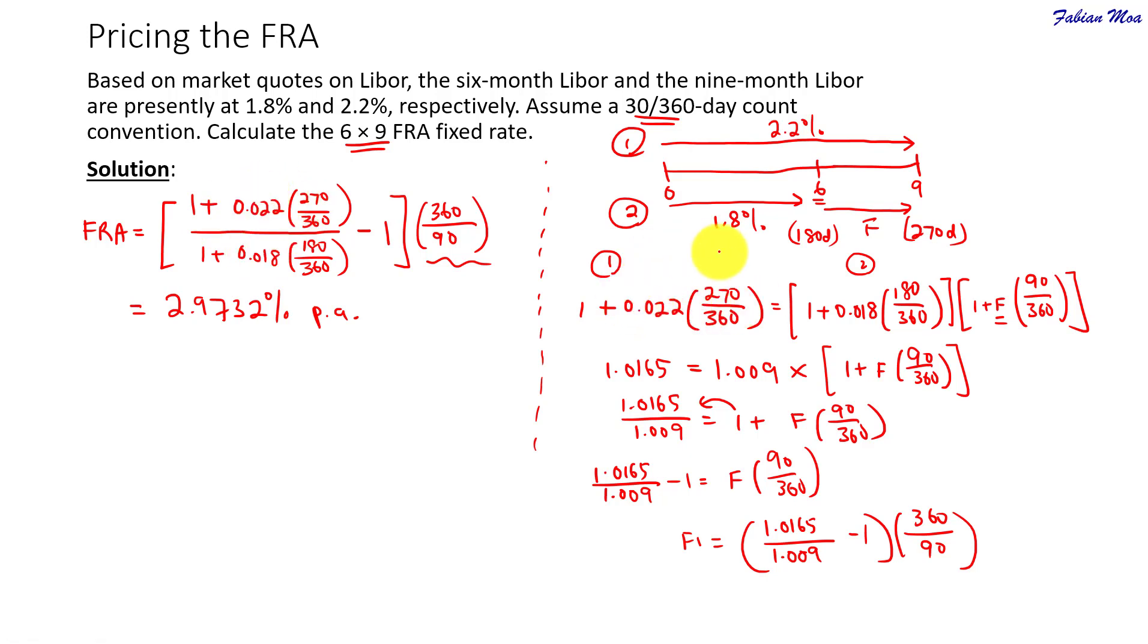But the good thing about this is that you don't have to really memorize anything. Just remember that the cost or the return for path 1 and path 2 should be equal so that there will be no arbitrage. Okay, first, if you want to remember the formula.